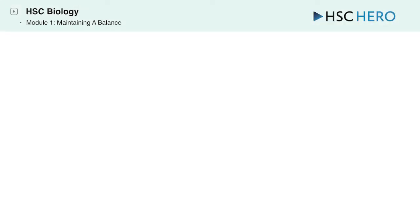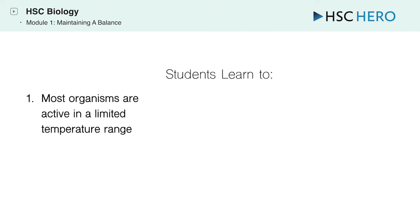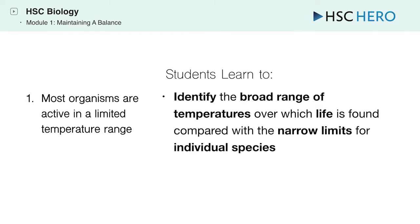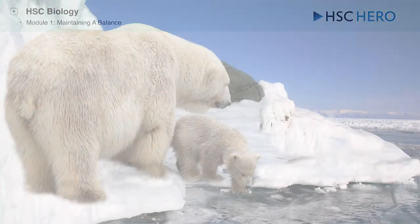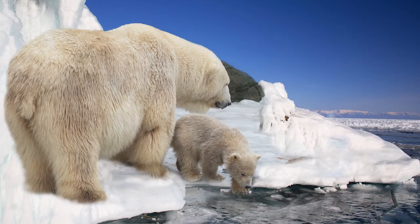Hey everyone! You'll be pleased to know that we're on the home stretch now for this module. For today's dot point, we're going to use what we've learned so far so that we can understand and identify the broad range of temperatures over which life is found, compared with the narrow limits for individual species. In simpler terms, we're going to start looking at animals and how everything we've learned so far about homeostasis applies to them. There will also be a lot of talk about polar bears in this video, so look forward to that.